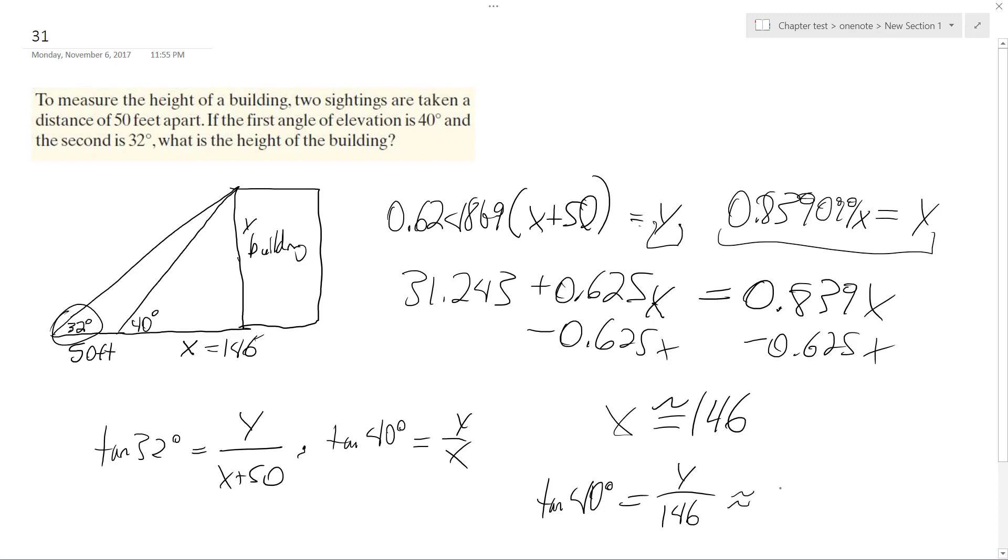Alright, so the tangent of 40 degrees times 146 is equal to 122. That still doesn't sound right. Hold on. It is right. So y is equal to approximately 122.5 feet.